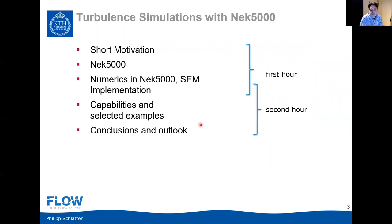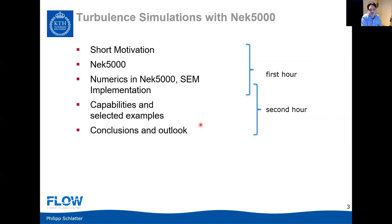The idea with today's presentation is to start with a short motivation, both for turbulence simulations in general, but also for NEC 5000, and to explain what NEC 5000 actually is and a little bit about its history. Then we will dive into a more detailed analysis of NEC 5000, looking at the numerics, the implementations, and why this particular type of implementation is necessary. In the second hour, I'll go over a number of selected examples showing how we have used NEC 5000 over the last ten years, simulating both external flows—mostly aeronautical—and internal flows, mostly pipe flows.